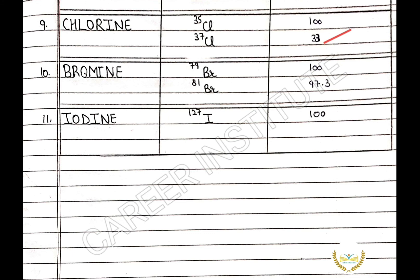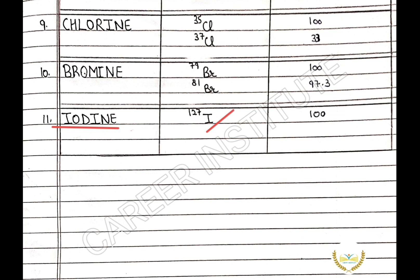The next element is bromine. Bromine-79 has the relative abundance of 100%. Bromine-81 has the relative abundance of 97.3%. The last element is iodine. Iodine-127 has the relative abundance of 100%.